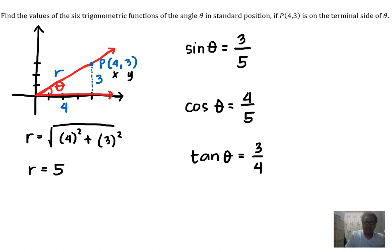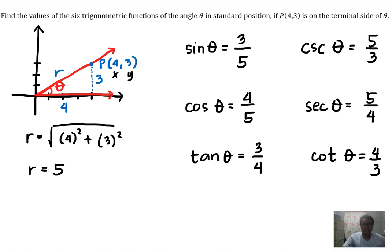And then the reciprocals: cosecant of theta is equal to 5 over 3, secant of theta is 5 over 4, and cotangent of theta is 4 over 3. So these are the six trigonometric functions of the angle theta.